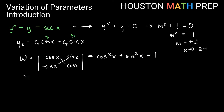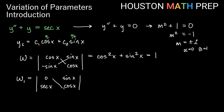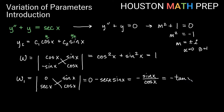For W1 and W2, we replace the respective columns. For W1, we replace the first column with 0 and sec(x), keeping the original second column. The determinant is 0·cos(x) − sec(x)·sin(x) = −sec(x)·sin(x) = −sin(x)/cos(x) = −tan(x). So W1 = −tan(x).